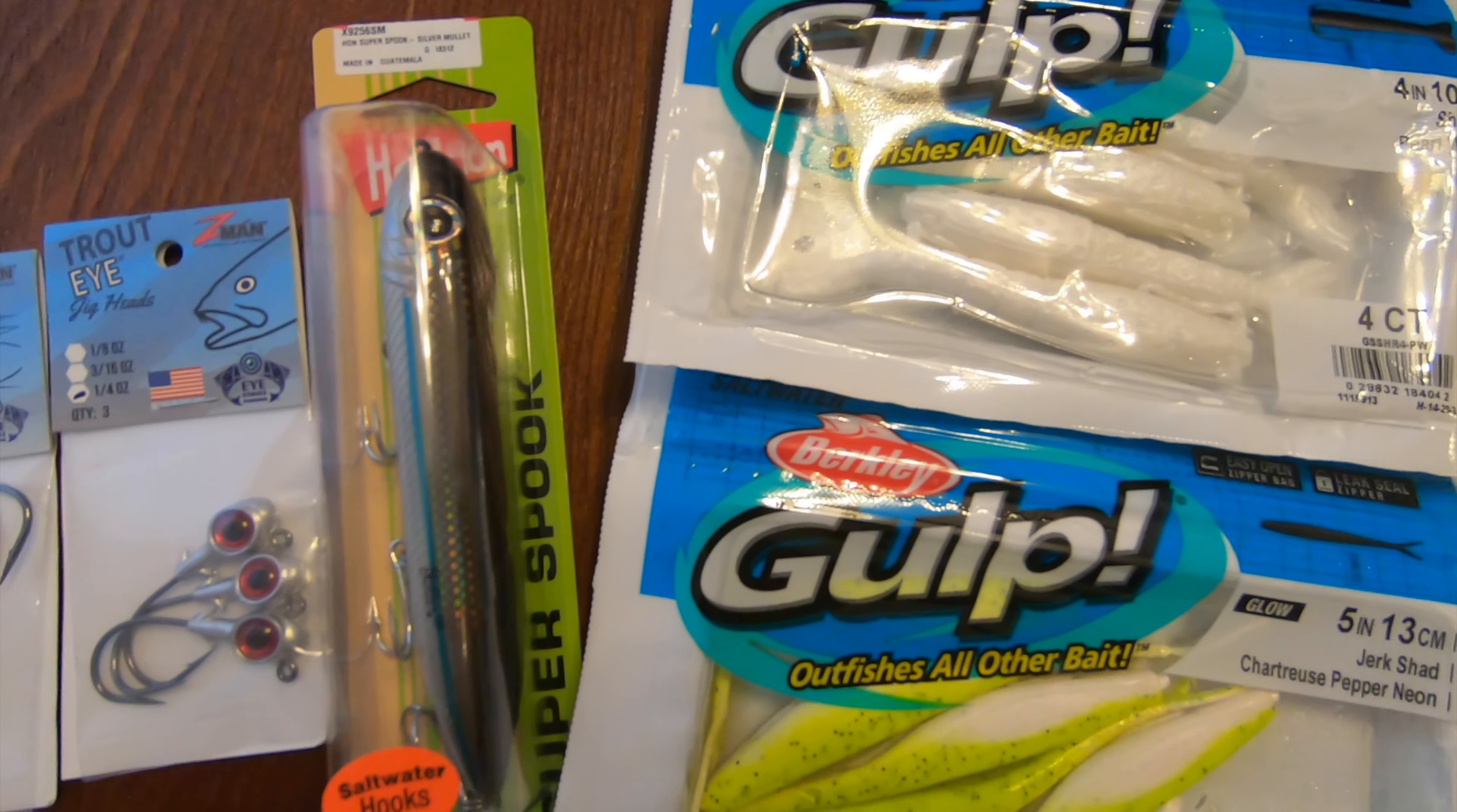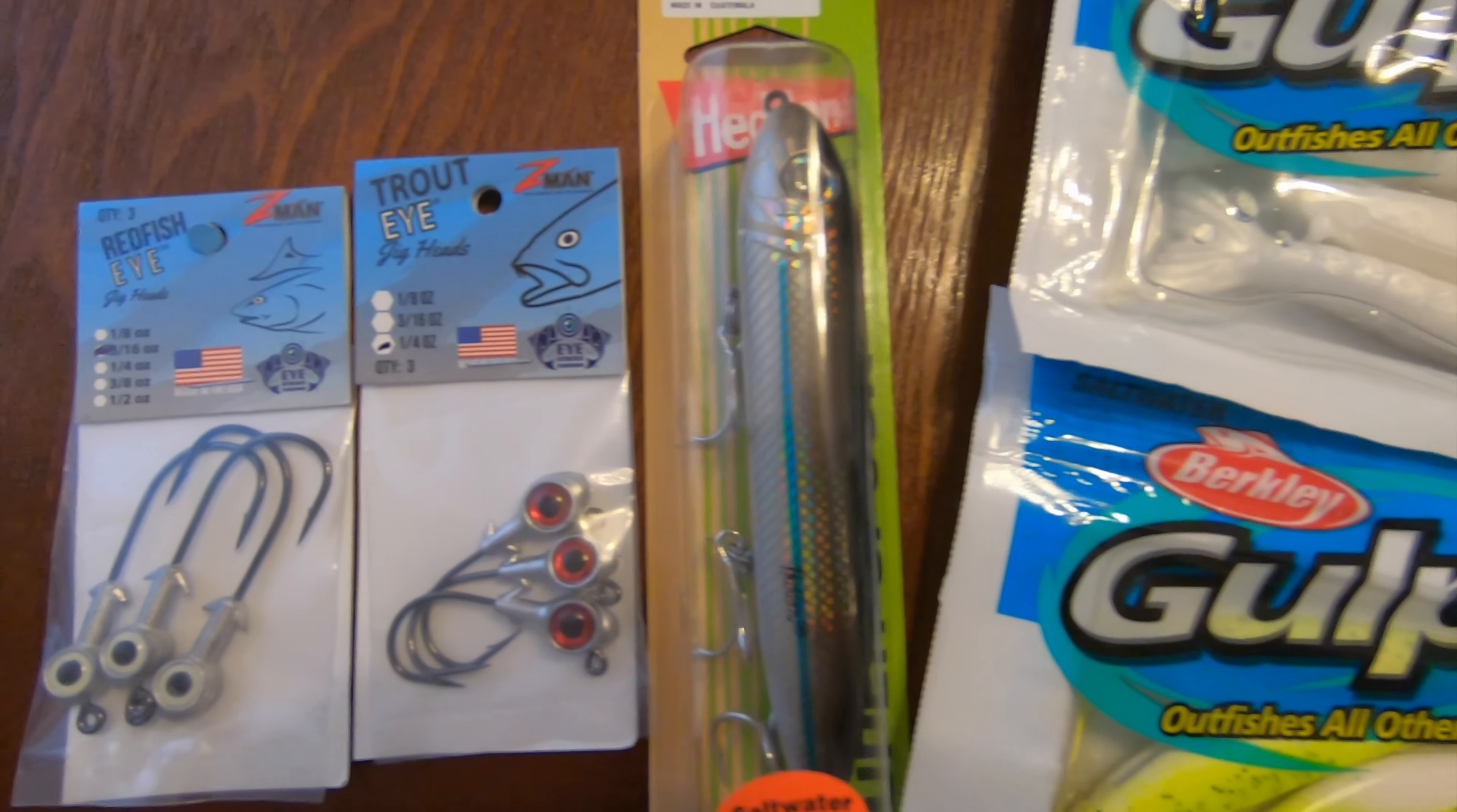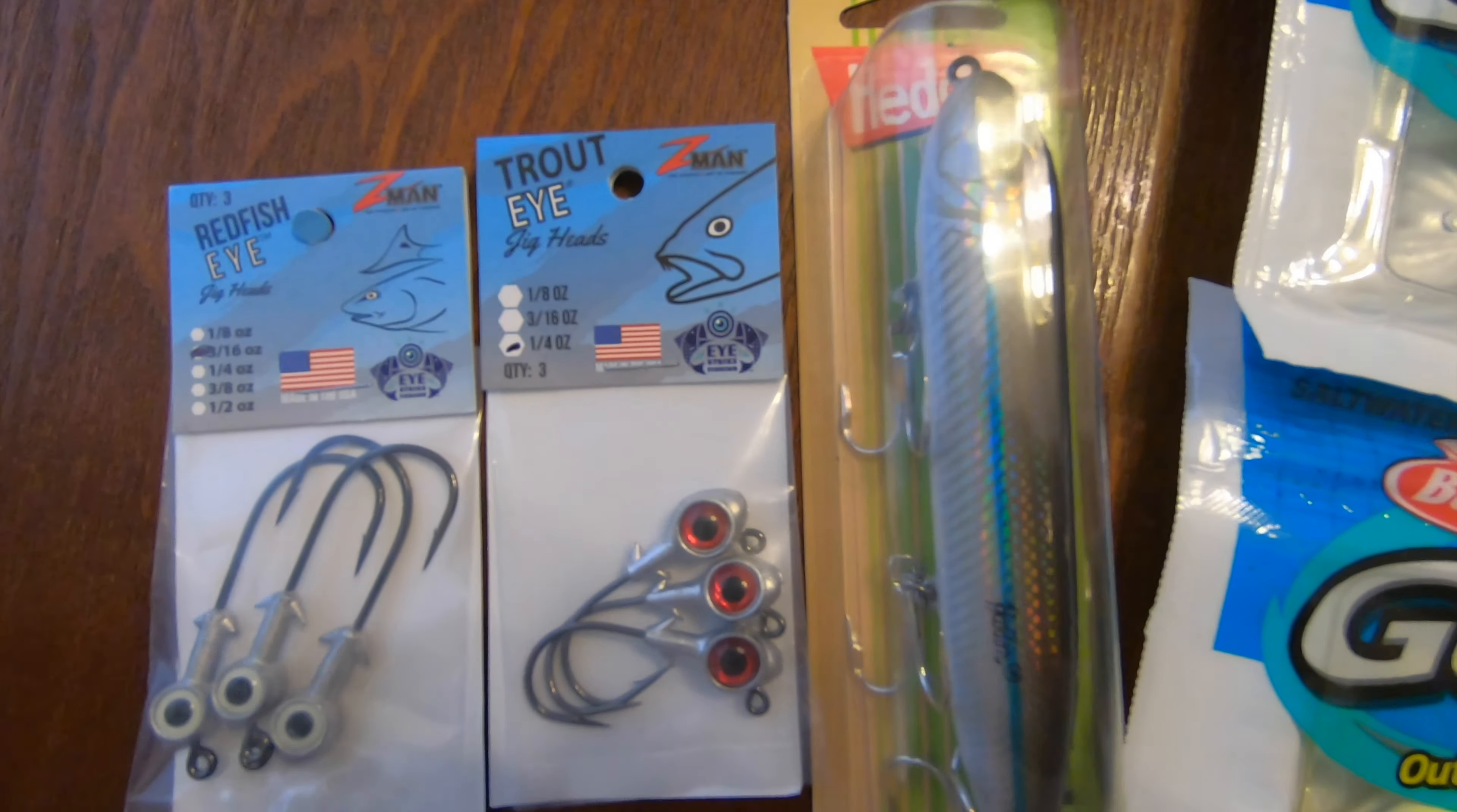And of course, you got to have the Heddon Super Spook topwater, and then a couple sets of Ice Track fishing jig heads. One is the redfish eye in 3/16th ounce, and the other is a set of three in the quarter ounce trout eye. Some of my favorite baits, and what I'm using in all of the videos that I've created.